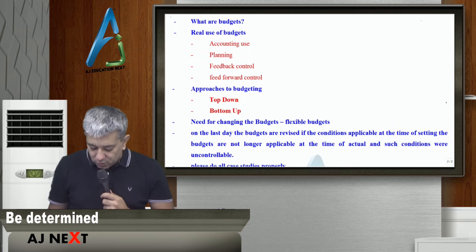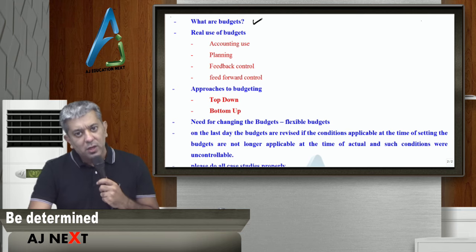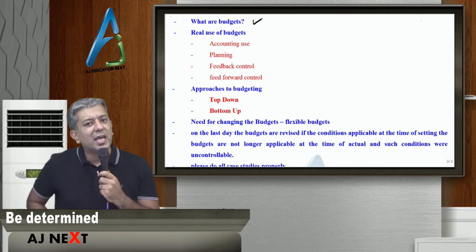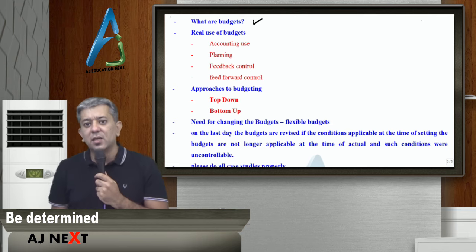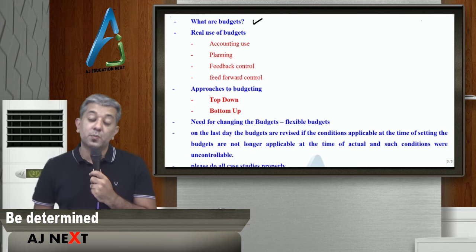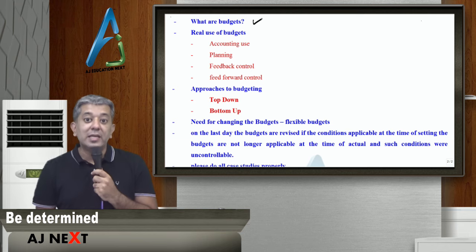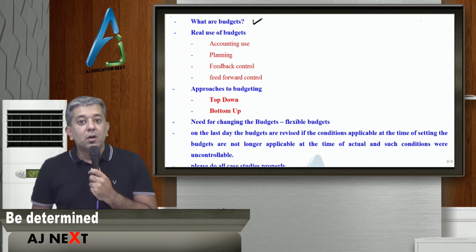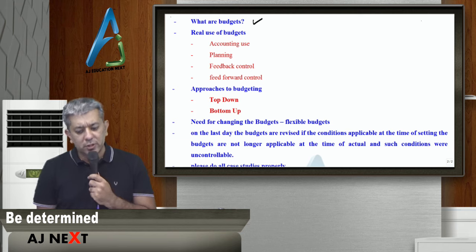Now, what are budgets? Budgets are estimates for a certain period — next year, next month, next 10 years, next 5 years — what are we going to do? Our planning is documented, and we call that documentation budgets.